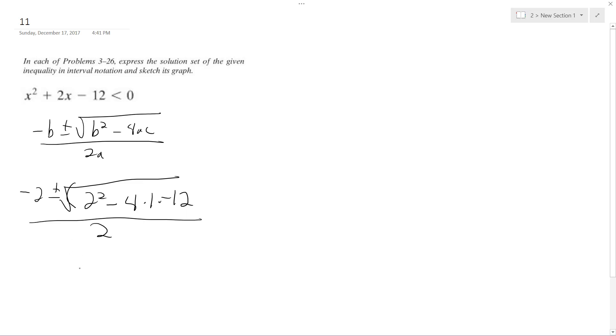So when you do all this together, we end up with negative 2 plus or minus square root of 52 all over 2. And this becomes negative 2 plus or minus 2 root 13 over 2. The 2's cancel out. We get negative 1 plus or minus square root of 13.